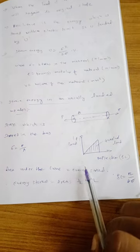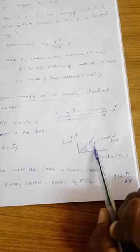If we show this in the form of a graph — load versus deflection — as the load is increasing, deflection will also increase. So P is directly proportional to delta L, and the graph will be linear. The area under the graph is nothing but work done, and work done is nothing but strain energy. This is for the gradually applied load case. For gradually applied load, this triangular area is the strain energy: U = ½ × P × ΔL.